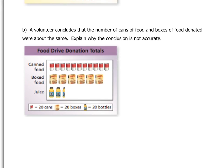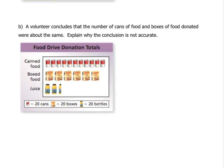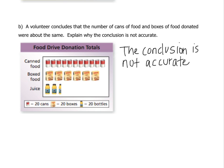For letter B, a volunteer concludes that the number of cans of food and boxes of food donated were about the same — explain why the conclusion is not accurate. You can use a pictograph and there's nothing wrong with a pictograph, but what's misleading here is that the food boxes are almost as wide as two cans. So when the row for food boxes almost matches the row for cans, you think they would be equal — but they're not, because cans are a lot skinnier than food boxes. The suggestion would be to make all of the pictures the same width. The conclusion is not accurate because the pictures are not the same width.